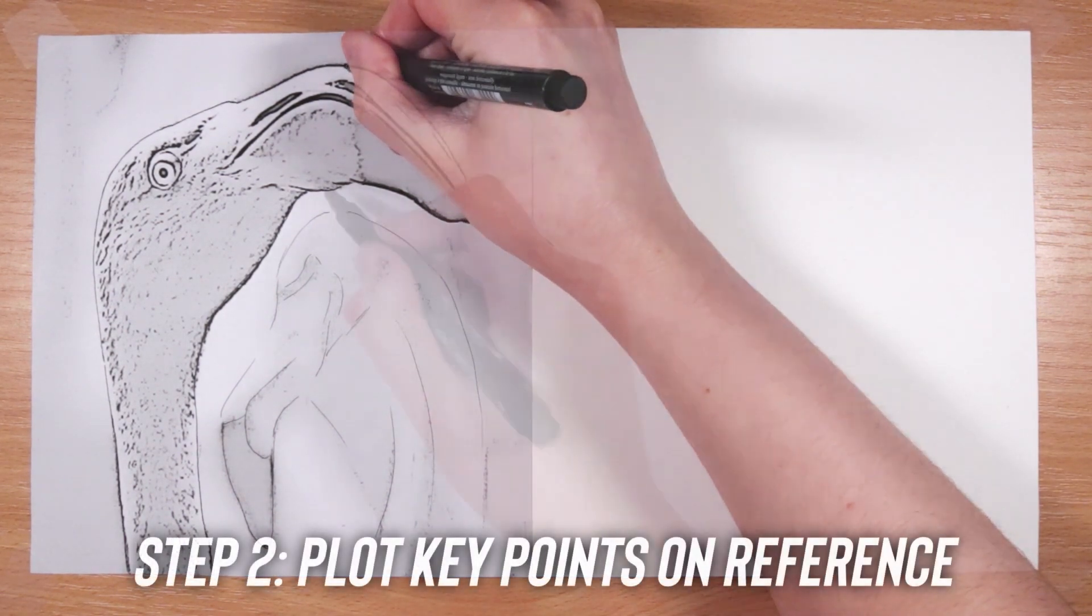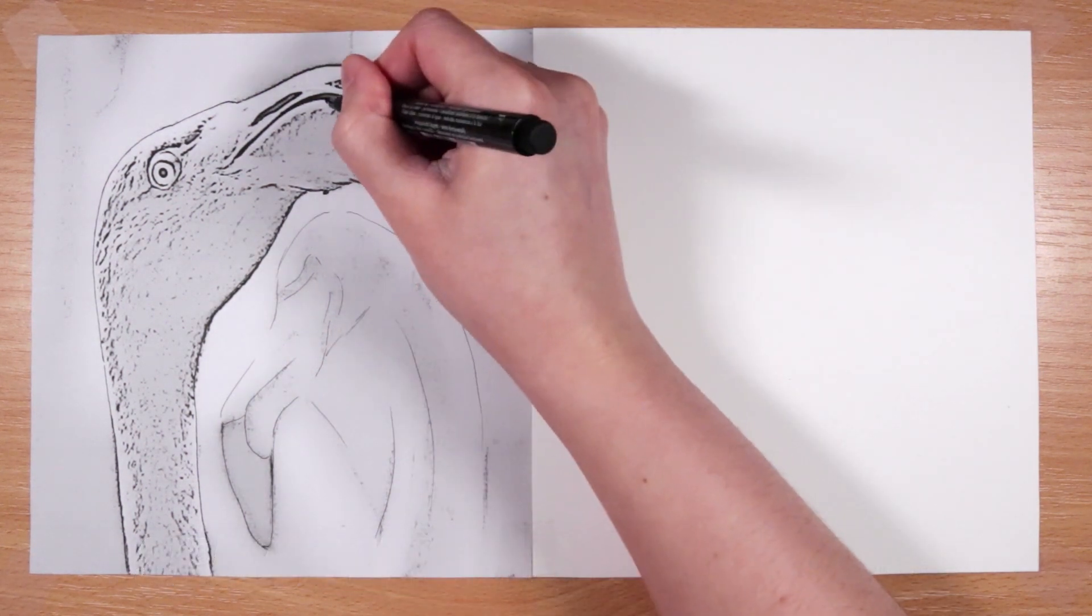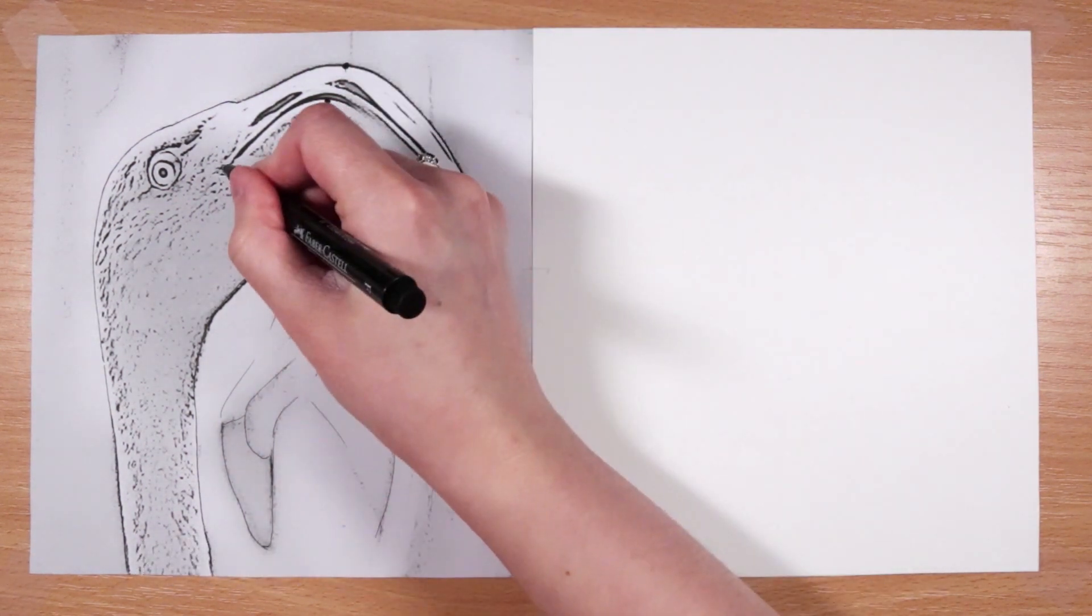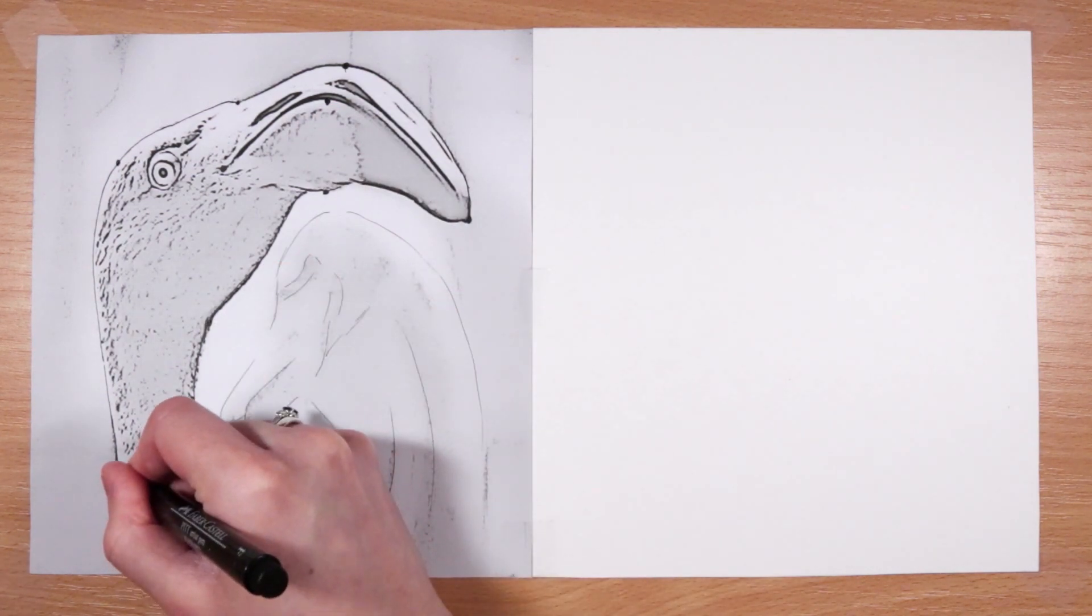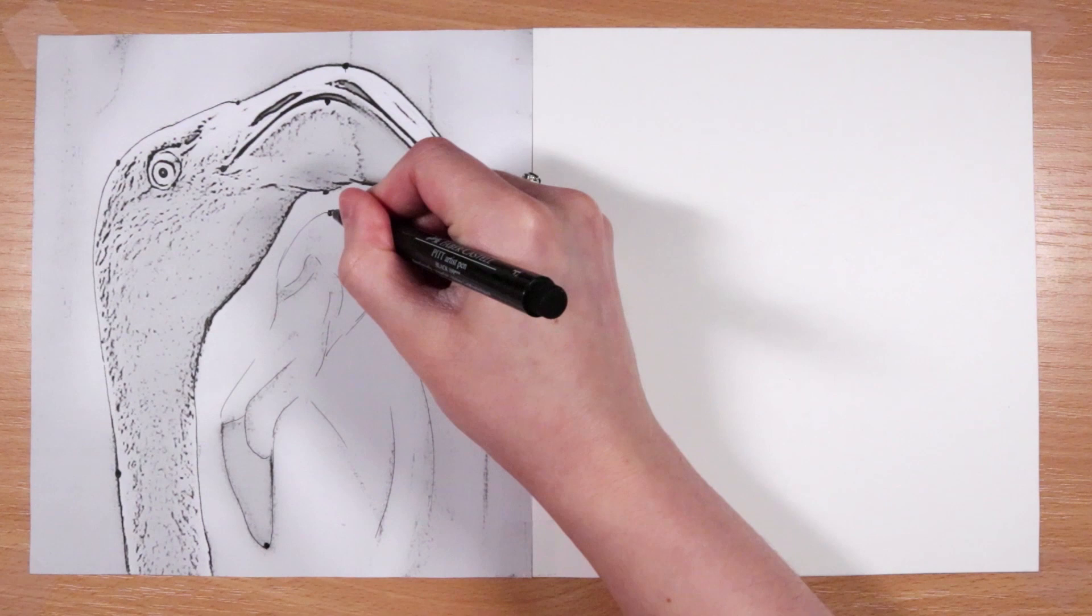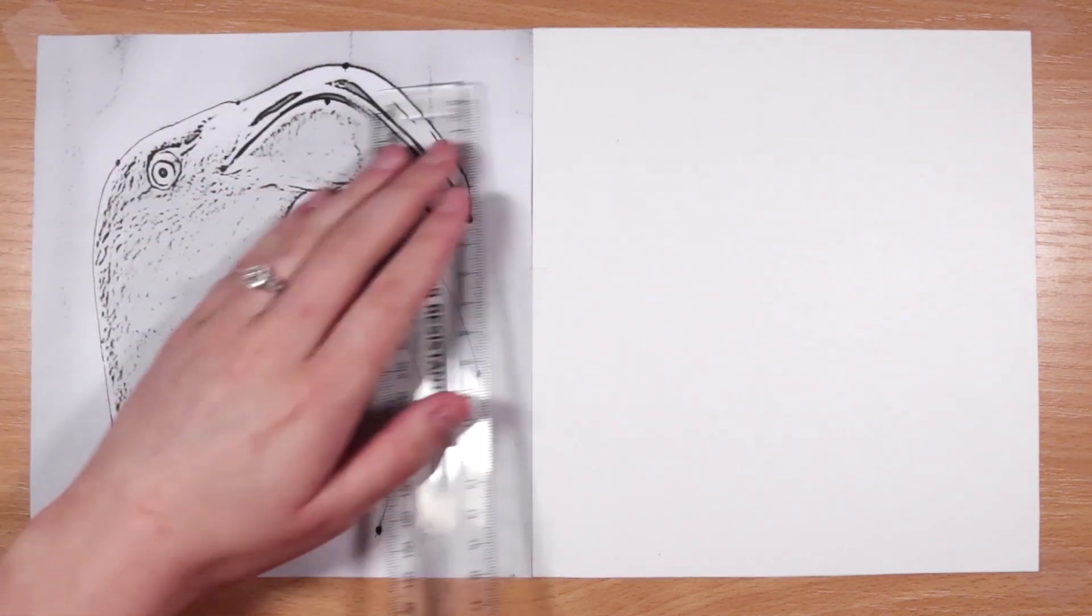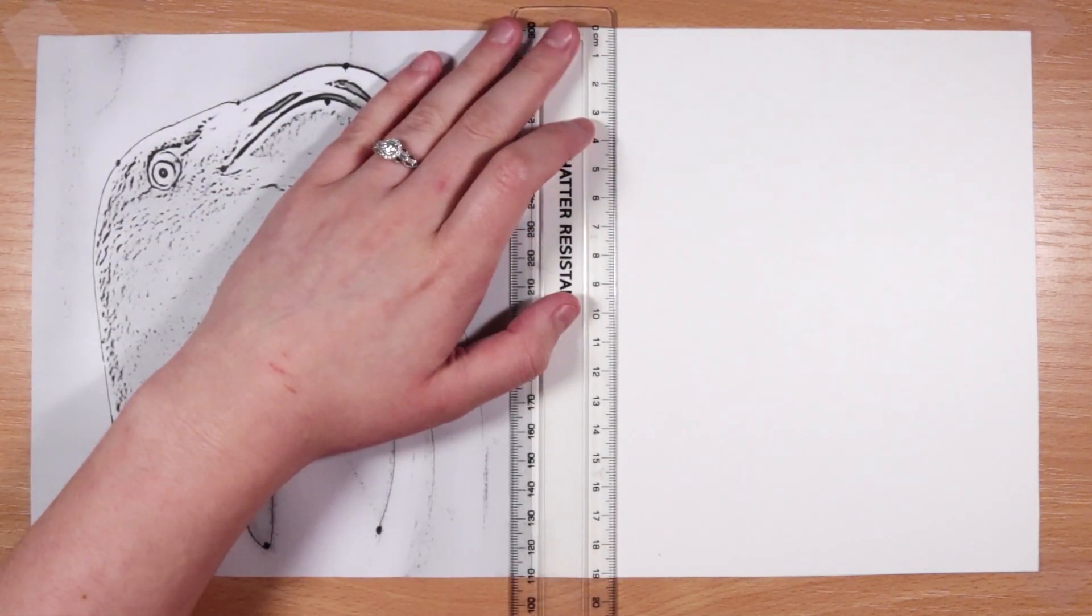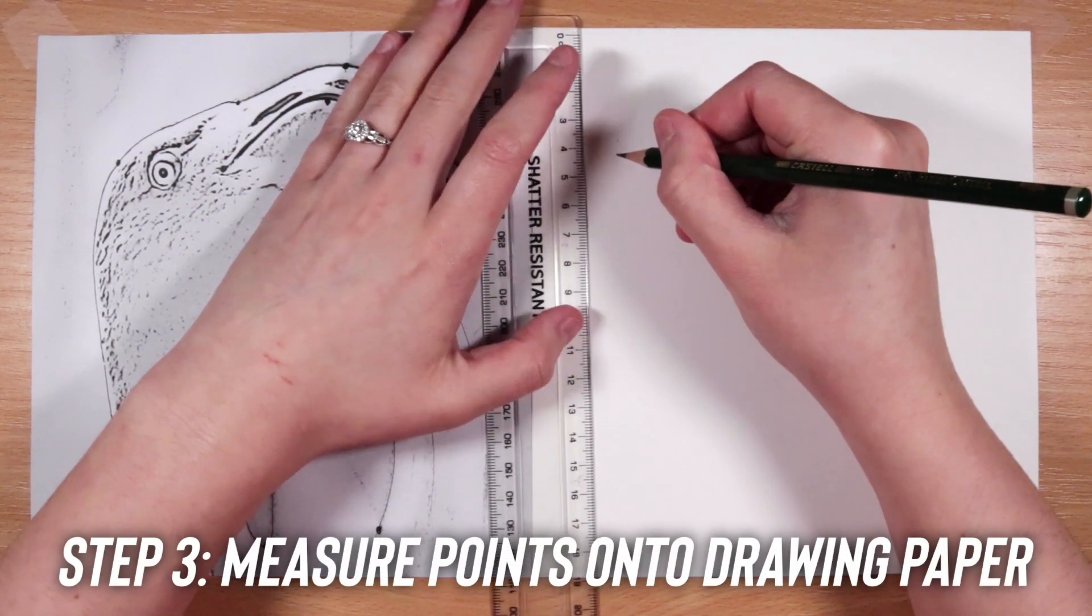Step two is I like to use key points for this technique. So instead of using a grid method or tracing it or free handing it completely, I like to have a little bit of guidance by picking some key areas. I'm just using that fine liner to create little dots on these key parts of the drawing. You can decide how many of these points you want to do.